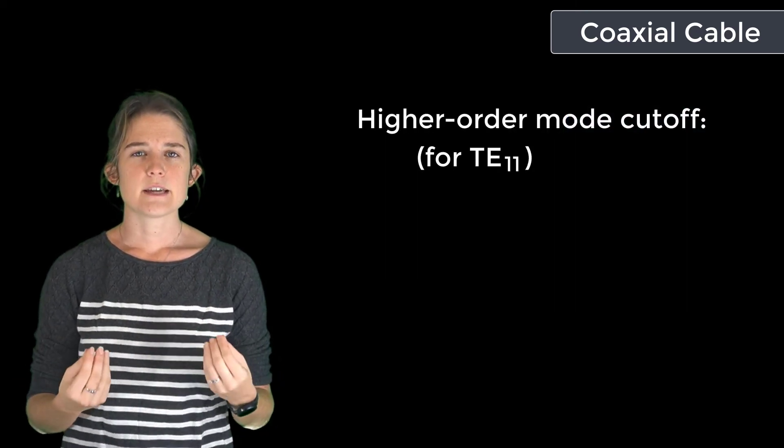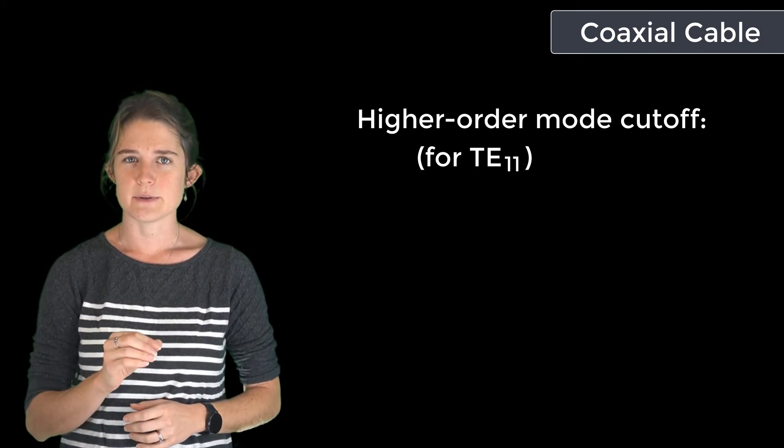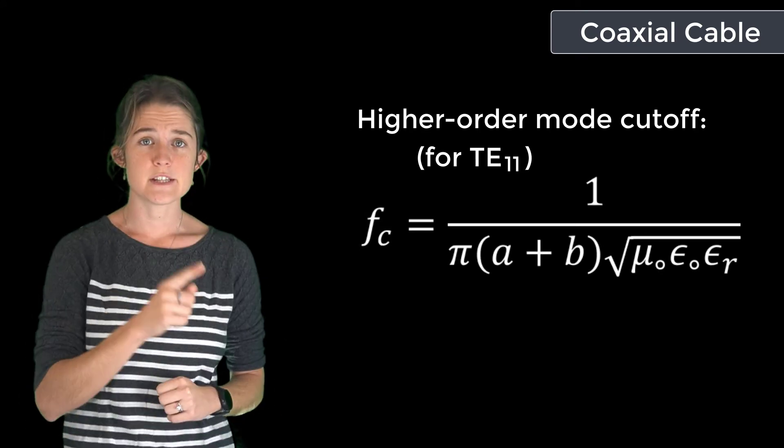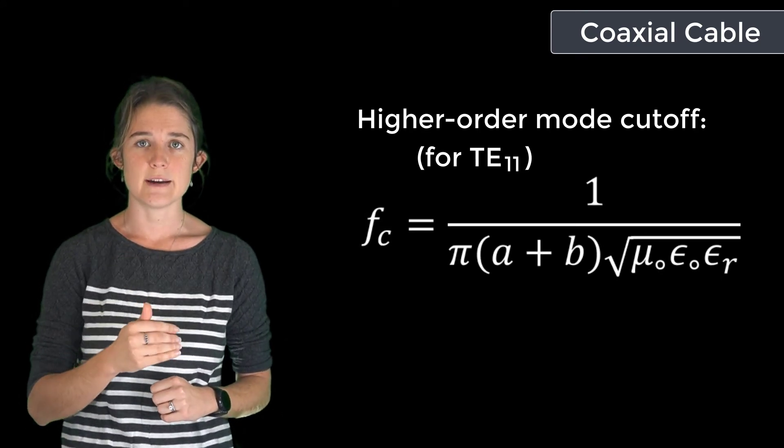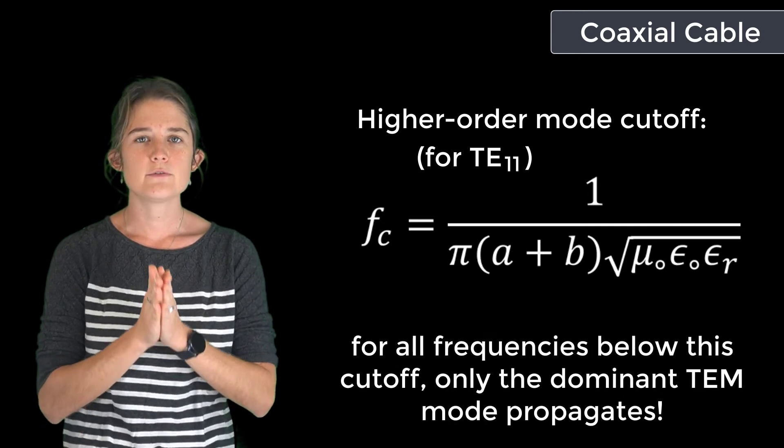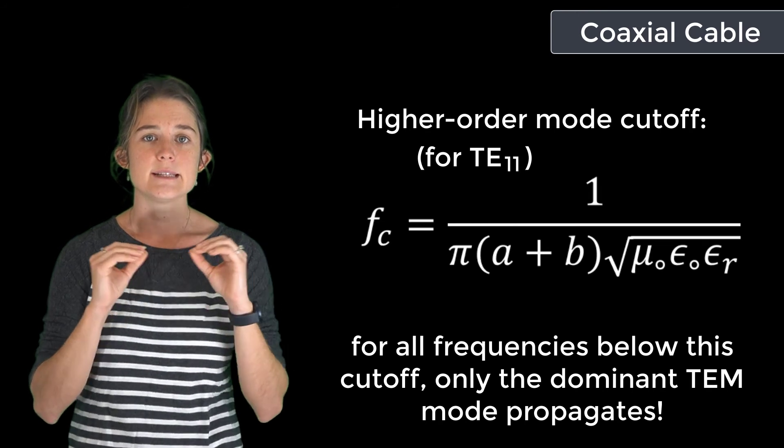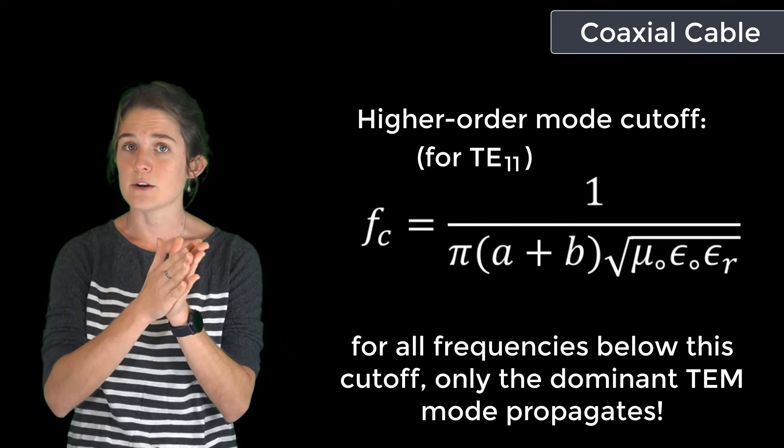To calculate the cutoff frequency of the TE11 mode, which is the lowest frequency higher order mode, use this equation: 1 over π times the sum of a and b, times the square root of μ times ε. For all frequencies below that mode cutoff, the coax will be operating in its single mode transmission bandwidth and only transmitting the TEM mode.